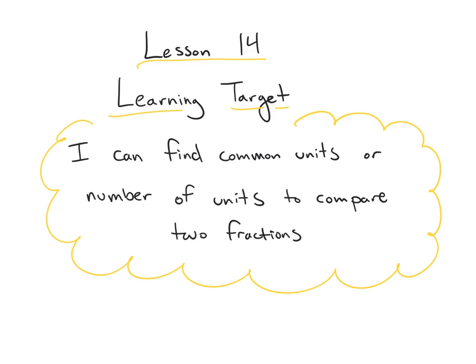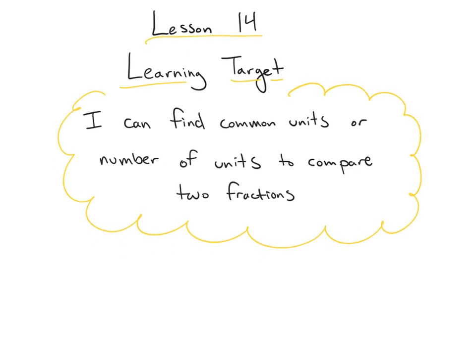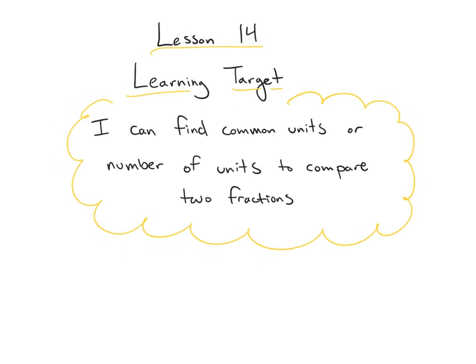Before we jump into Problem 1, let's talk a little bit about our numerator and denominator, and another way that we can look at those two numbers. Looking at the fraction two-thirds, we have our numerator of two up top — this is the number of units. It represents two of the three total pieces of the whole, which means that three is the units.